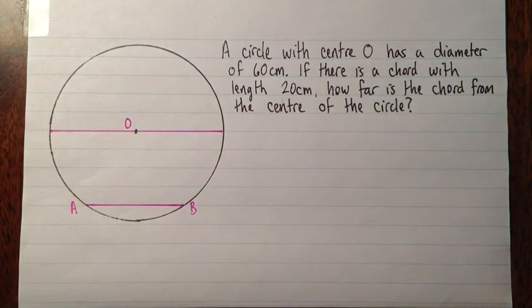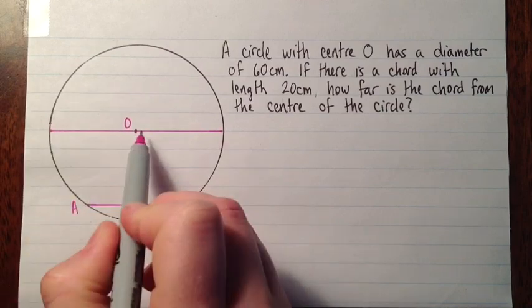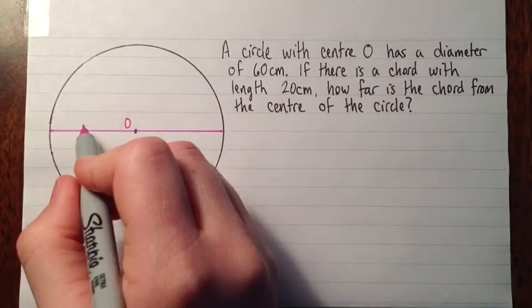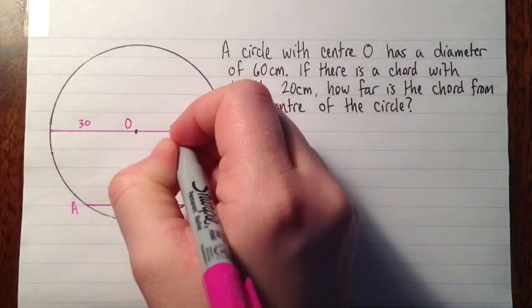So one thing I'm going to do right away, if the whole diameter is 60 centimeters, and I drew that passing through the center, then each half of it is going to be half. So this is 30, and this is 30.